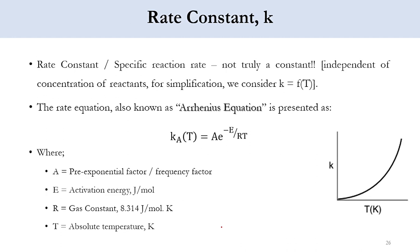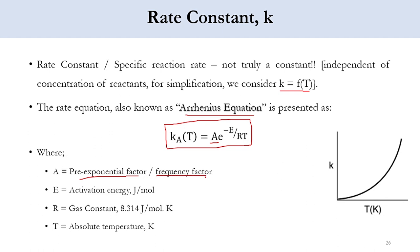Moving to the last topic for today: the rate constant, or specific reaction rate constant. Although called a constant, its value is not fixed — it is independent of pressure and concentration, but the only factor that affects it is temperature. The rate equation, also known as the Arrhenius equation, is: k(T) = A · e^(-E/RT), where A is the pre-exponential (frequency) factor, E is the activation energy, R is the ideal gas constant, and T is the absolute temperature.